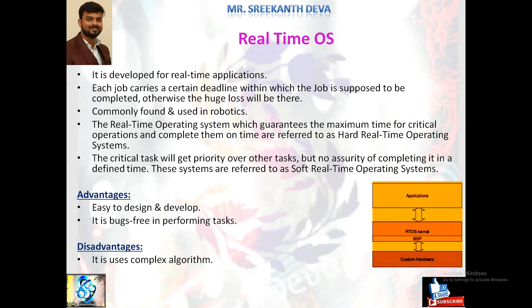Real-time OS are categorized as hard real-time and soft real-time. Examples include scientific and experimental systems, medical imaging systems, industrial control systems, weapon systems, robotics, and air traffic control systems. Disadvantages: performs limited tasks so cannot be used for general purpose, expensive as it requires a lot of system resources, and special precautions must be taken to protect database contents from unauthorized access or accidental destruction. Internally it uses an RTOS kernel, BSP, and custom hardware.